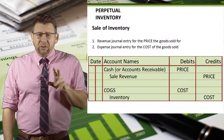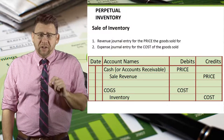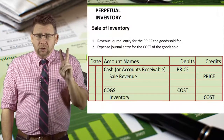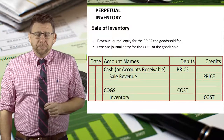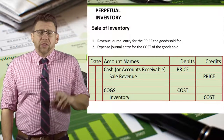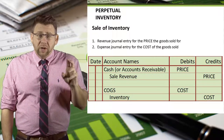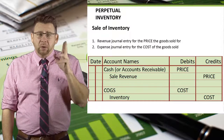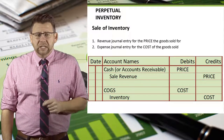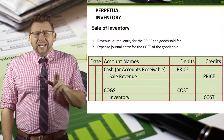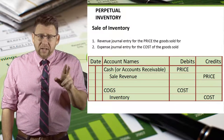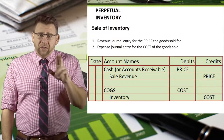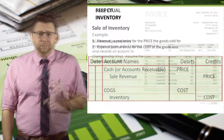When recording transactions involving the sale of goods, we have to make two journal entries. The first is to record the revenue from the sale, because goods are sold at their price. The second is to record the cost from the sale, because the goods we sold weren't free.